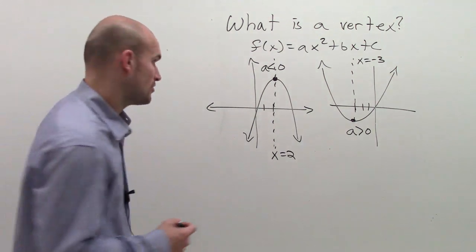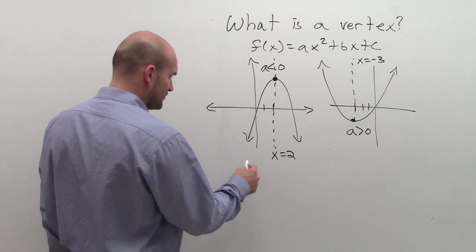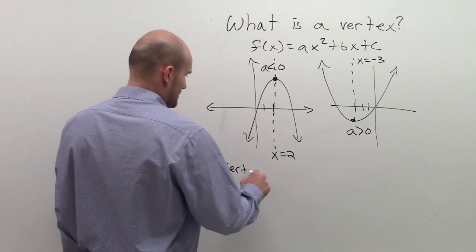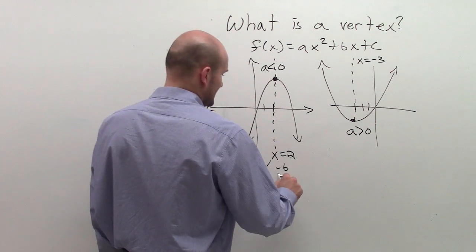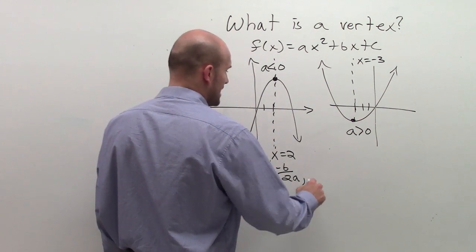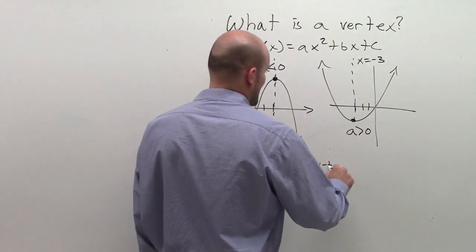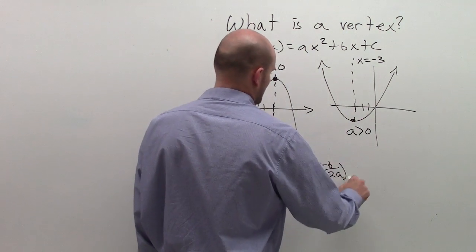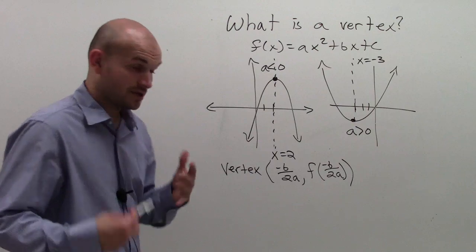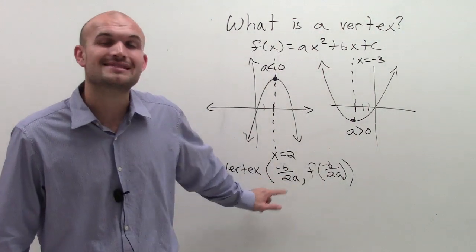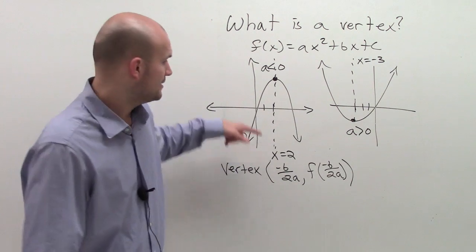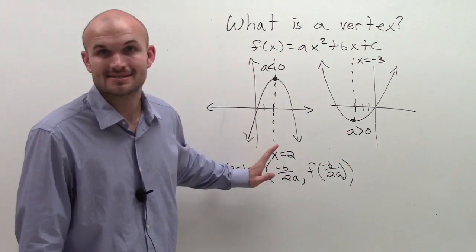Well, I'll write out the formula here, right here. The formula for the vertex is going to be -b/(2a), f(-b/(2a)). So a couple things you need to remember. One, -b/(2a), remember, that tells us the axis of symmetry, right? That tells us how to find the axis of symmetry.